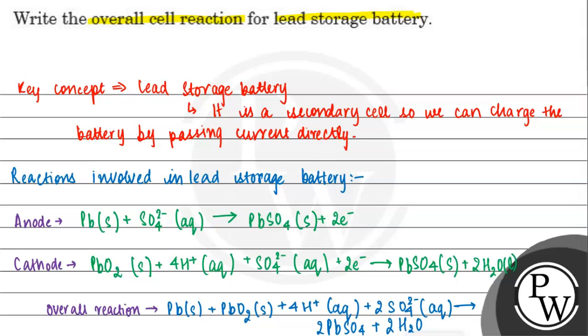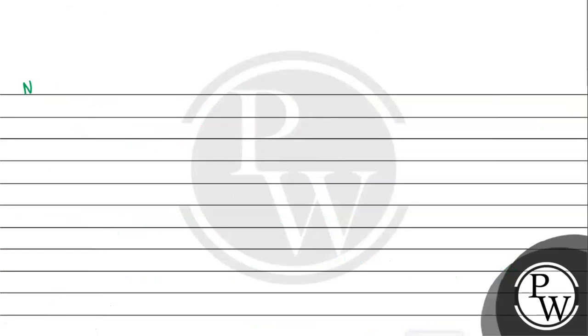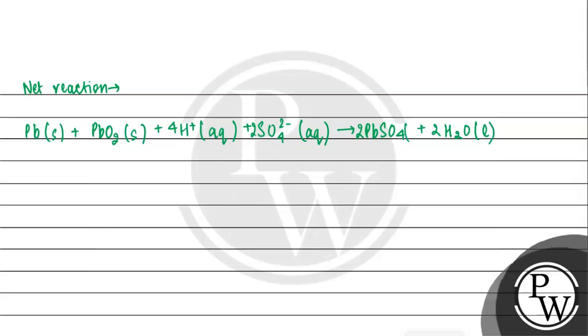The two electrons have cancelled. We added these two reactions. Overall or net reaction: Pb(s) + PbO2(s) + 4H+(aq) + 2SO4^2-(aq) gives 2PbSO4(s) + 2H2O(l). This is in liquid state and PbSO4 is in solid state.